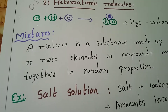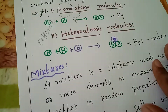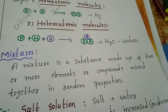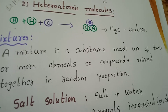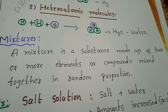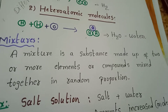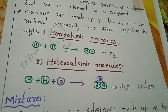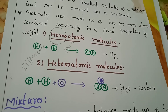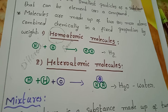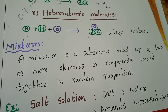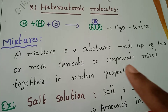Next one: mixtures. A mixture is a substance made up of more elements or compounds together in a random proportion. A mixture can be made up of two compounds, two elements, three, four, or more. A water molecule must always be formed by two hydrogens and one oxygen — that never changes. But it is not like that for a mixture — a mixture can be in random proportion.